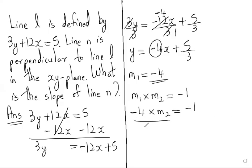Now to solve it we need to divide by minus 4 because we want only m2 here. Minus minus cancel, 4 and 4 cancel, we get m2 is equal to 1 by 4. So this will be the slope of line n.